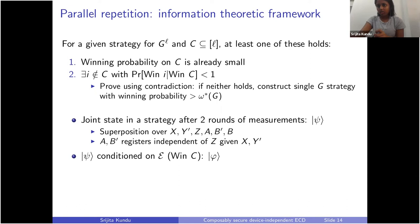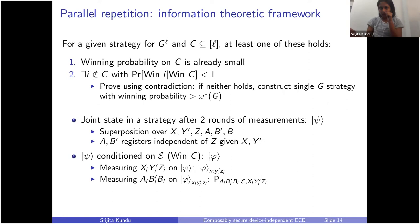We call this state ψ. We can condition ψ on the event of winning in C, which we call E, giving us a state φ. What we call φ(xi, y'i, zi) is the state you get by measuring the xi, y'i, and zi registers on φ — which are in superposition — and getting outputs small xi, small y'i, small zi. If you then measure the ai, b'i, bi registers on this state, you get a conditional distribution equal to the conditional output distribution from the strategy used in the game, conditioned on winning in C.